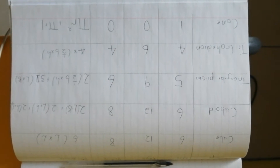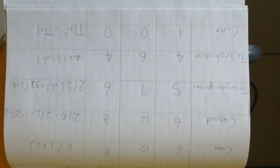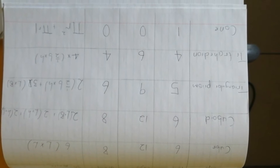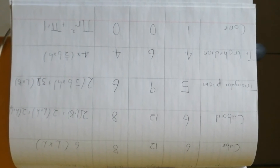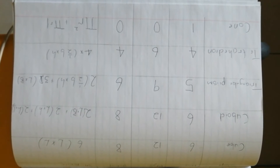For the cuboid, because it has six faces with different dimensions, I used different formulas for the rectangles: 2 length times breadth, because it has two equal sides; plus 2 length times height, because it has two equal sides; plus 2 height times breadth, because it has two equal sides.